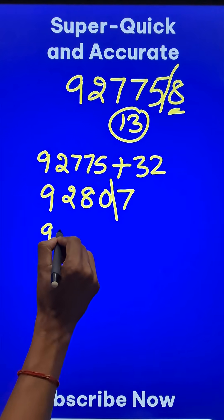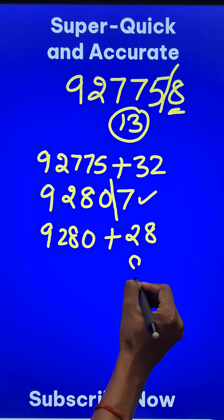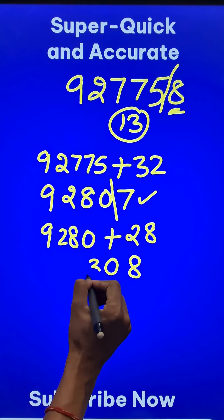Separate out the last digit. 9280, the remaining number, plus 4 times the last digit, 28. This becomes 8, then 0, and 3, and 9.